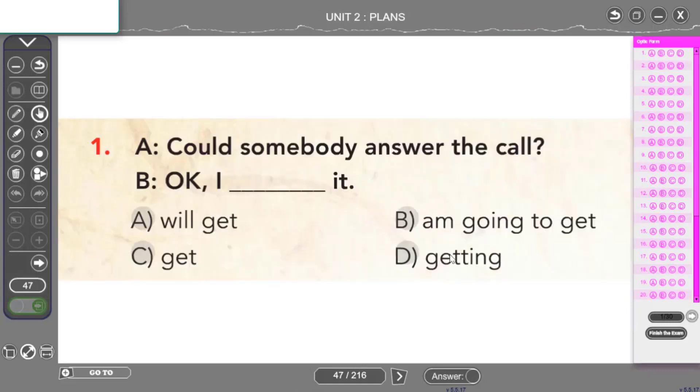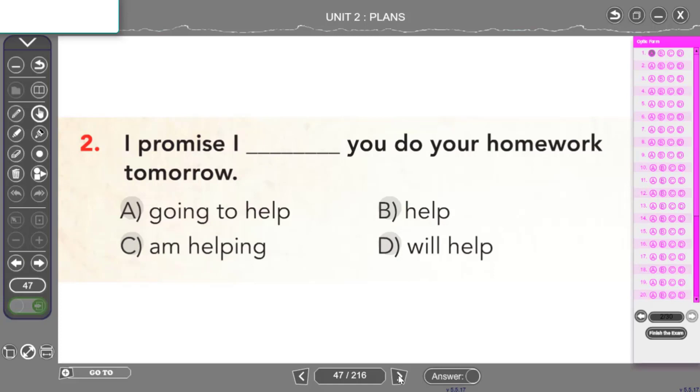Pleasant'imize devam ediyoruz. Birinci soruya bakalım. Could somebody answer the call? Birisi aramayı cevaplayabilir mi? Okay I will get it dememiz gerekiyor. Çünkü hatırlayalım anlık konuşmalarda anlık olan olaylarda anlık verdiğimiz kararlarda ne kullanıyorduk? Will kullanıyorduk. I will get it. B cevabımız olacak. I promise I will help you do your homework tomorrow. Söz veriyorum yarın ödevini yapmana yardım edeceğim. I promise, I think, I hope, I believe gibi yapılar hatırlayalım hangi yapıyla kullanılıyordu? Will yapısıyla kullanılıyordu. O yüzden de burada will olan seçeneğimizi arayacağız.